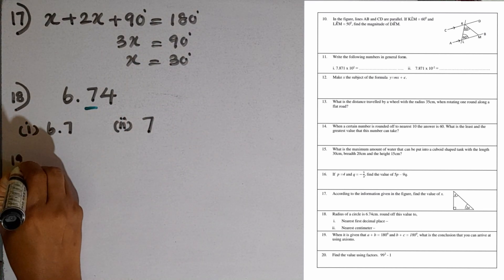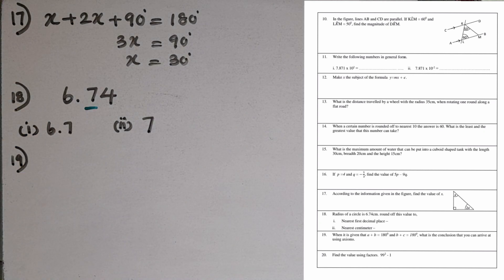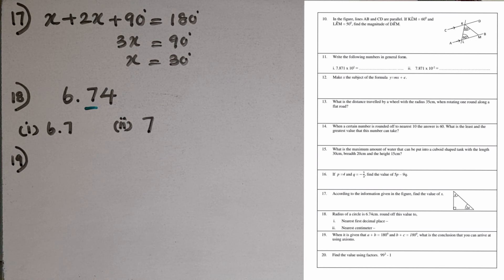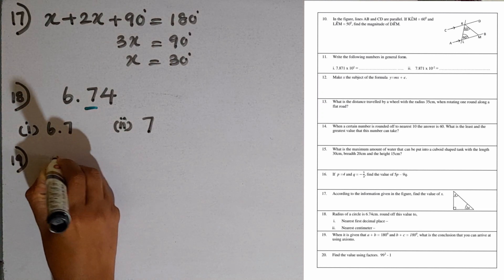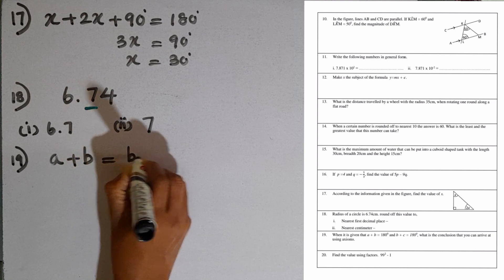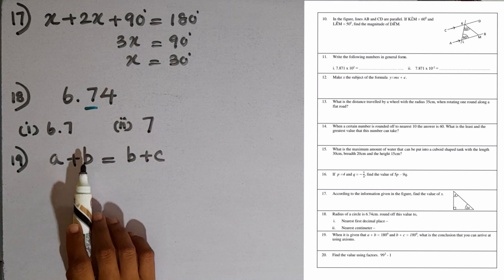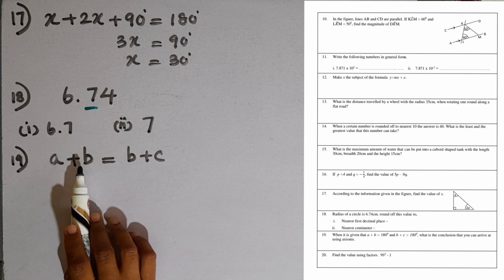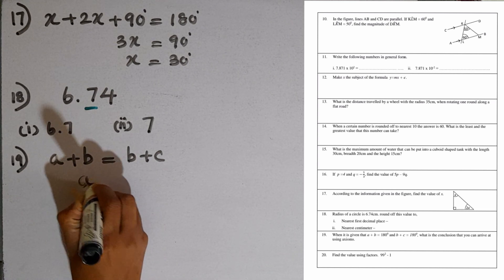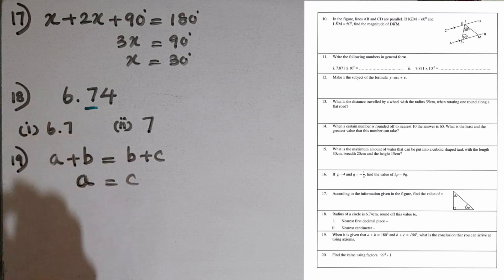Question number 19: given that A plus B equals 180 degrees and B plus C equals 180 degrees, what conclusion can you arrive at using axioms? Since both equal 180 degrees, A plus B equals B plus C. As the same quantity B is on both sides, we can conclude that A equals C.